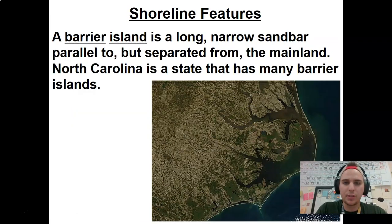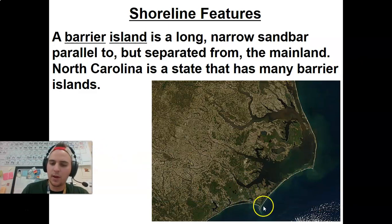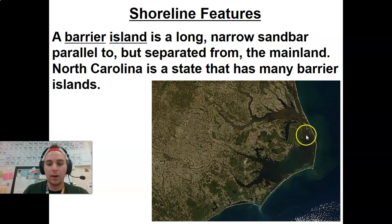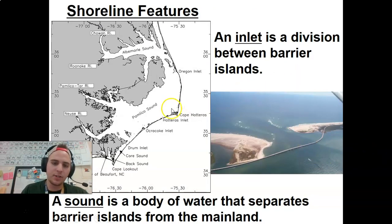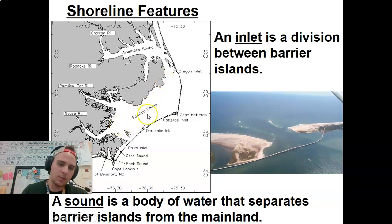In North Carolina, we've got a couple of interesting shoreline features. A barrier island is one of the things that we have — these long, narrow sandbars that are parallel to, but separated from, the mainland. All this in here is technically ocean water, but it is also technically North Carolina. North Carolina is a state that has many barrier islands spanning a good portion of the eastern side of the state. An inlet is the little division between the barrier islands — you can see on the map, like the Oregon Inlet. The sound is the body of water that separates them from the mainland — what is technically ocean water between the barrier islands and the shore.